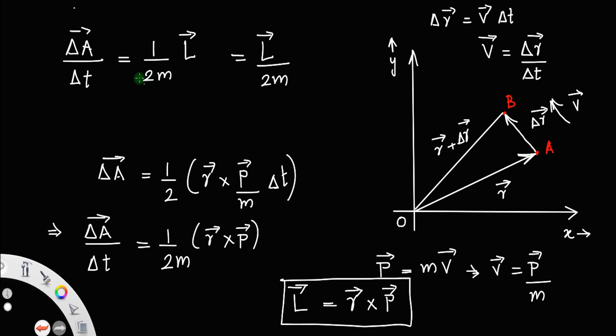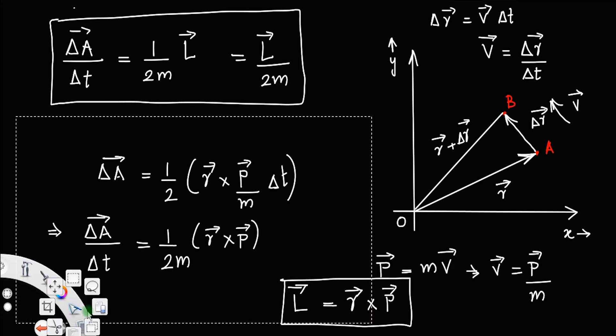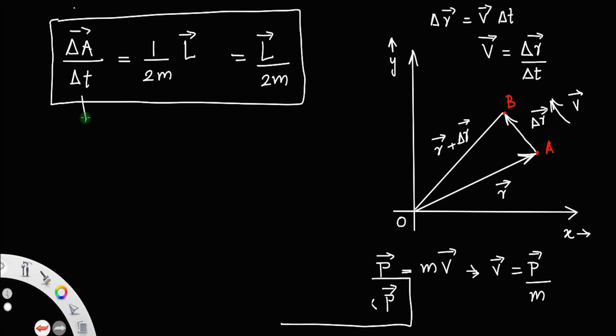So, this is the relationship between areal velocity and angular momentum. This is the areal velocity.